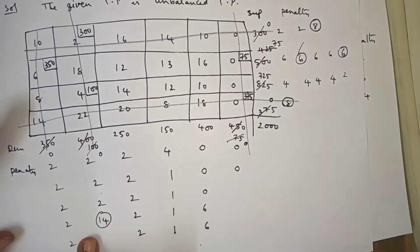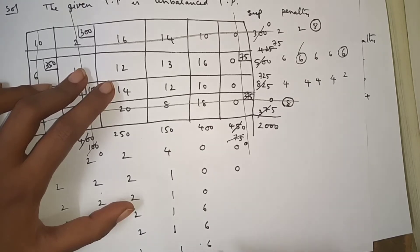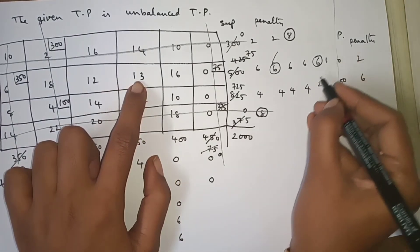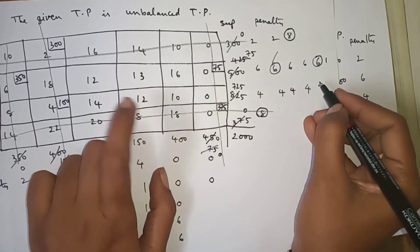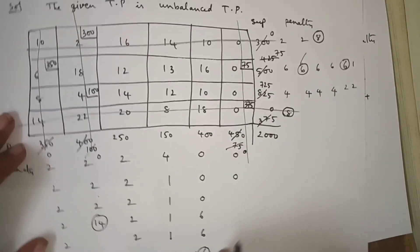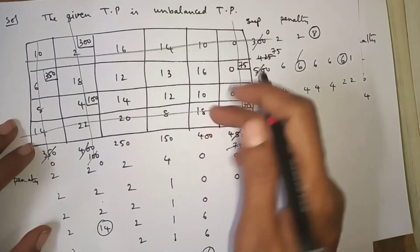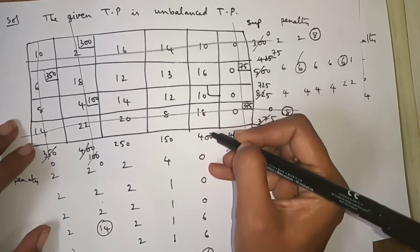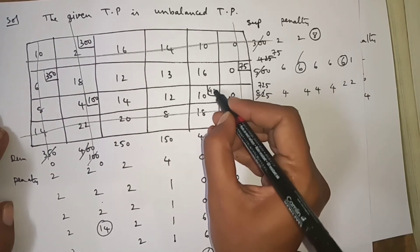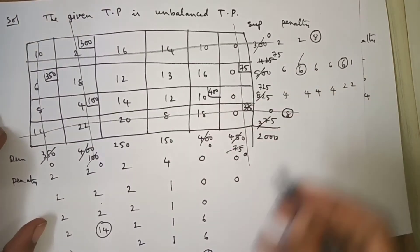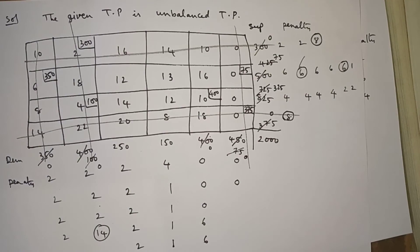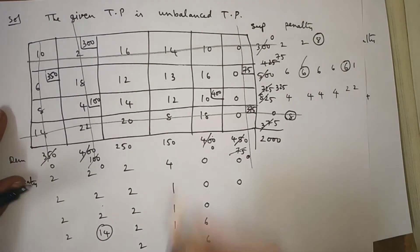Sixth iteration penalties: rows give 2, 1, 6. Column penalties: 12 minus 13 is 1; 14 minus 12 is 2. Highest penalty is 6. Enter into this column — least cost element is 10. Demand is 400, supply is 725, minimum is 400. I allocate 400, demand becomes 0. Supply remaining is 725 minus 400 = 325.